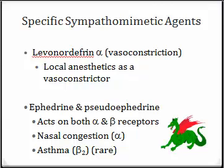Ephedrine and pseudoephedrine work on both alpha and beta receptors. They can be used for nasal congestion and colds due to their alpha vasoconstriction, and occasionally for asthma due to their stimulation of beta 2 receptors in the lungs. Ephedrine and pseudoephedrine are what people use to manufacture methamphetamine, which is why pseudoephedrine must now be purchased from behind the counter with monthly purchase limits.